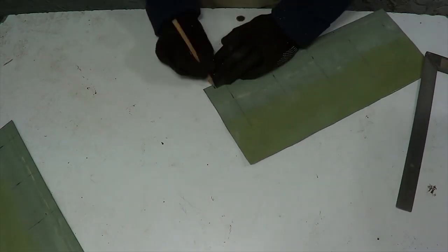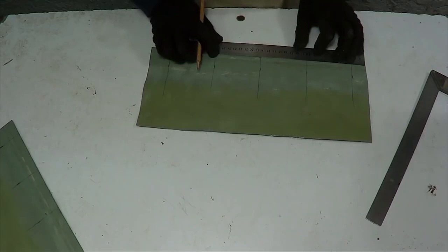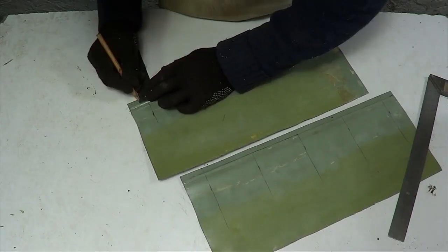From the long edge of the sheet, step back 1 cm and draw a line. This will be the place where the sheet bends. We do the same with the second blank.